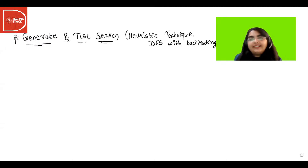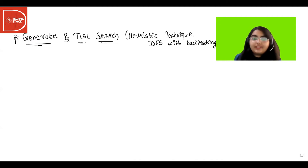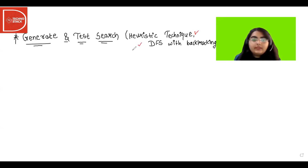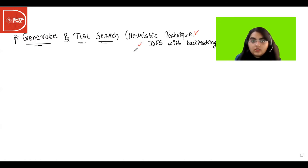Hello and welcome to Technostech. In this series on artificial intelligence, today's topic of discussion is Generate and Test Search. This technique uses heuristic functions and DFS with backtracking.